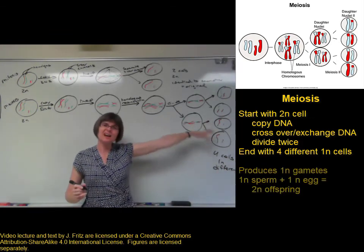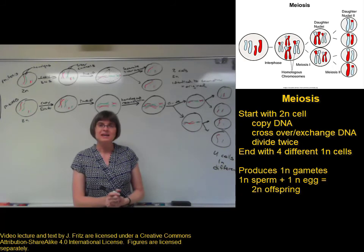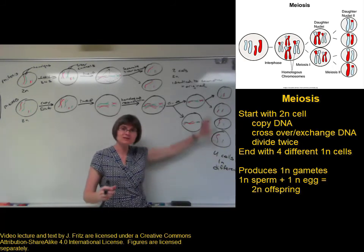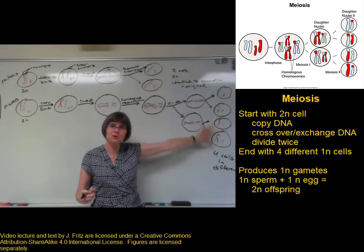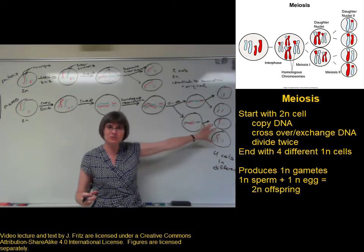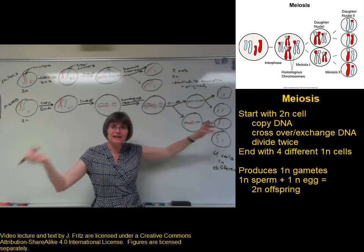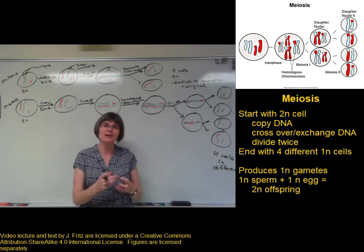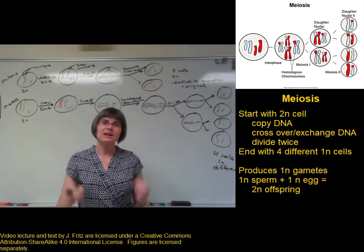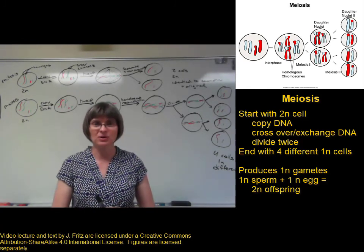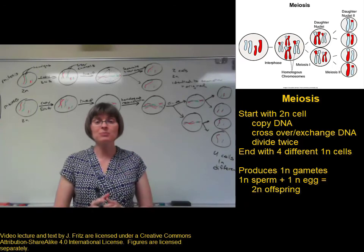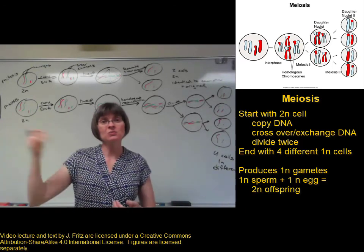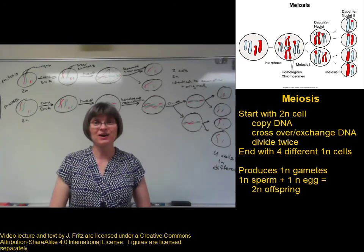These are the cells that could now be gametes. We could take two gametes — if this was a male, we could take one of these sperm and combine it with a 1N egg. When we combine the 1N sperm with the 1N egg, we get a 2N offspring: an offspring that has two copies of each chromosome, one that came from its mother and one that came from its father.